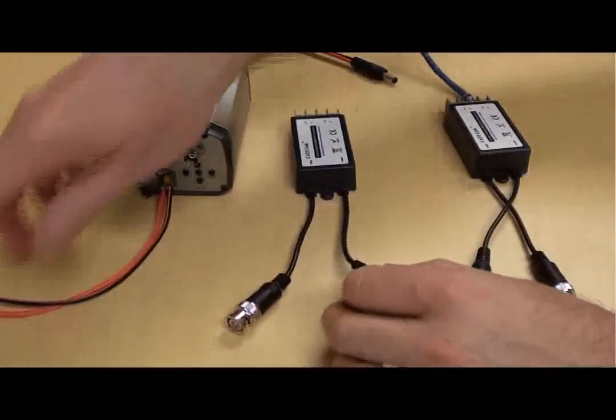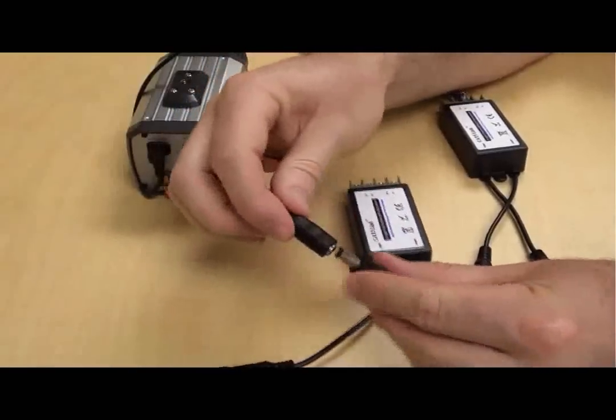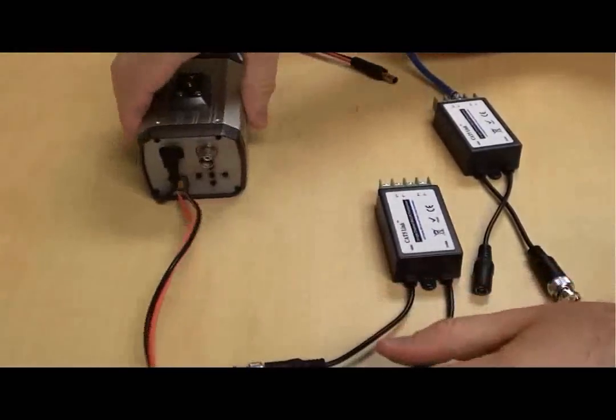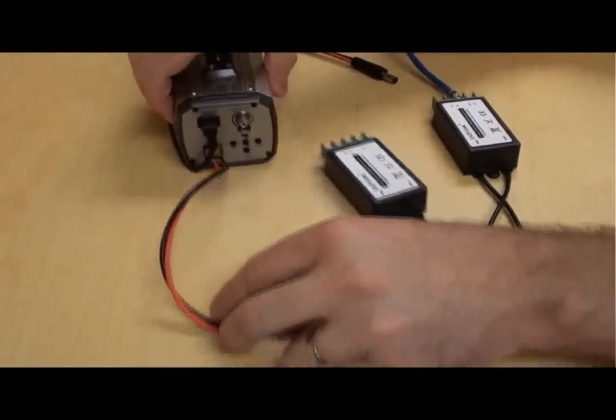On the camera side balun, we connect the power lead to the power input of the camera and the BNC video output of the camera to the BNC end of the balun.